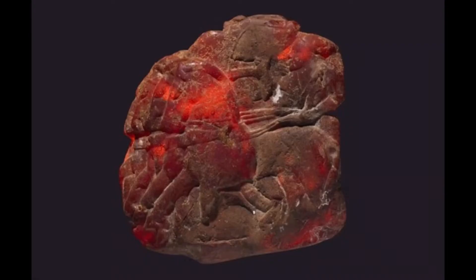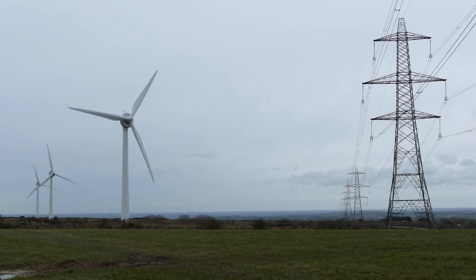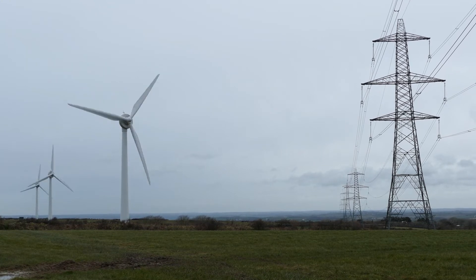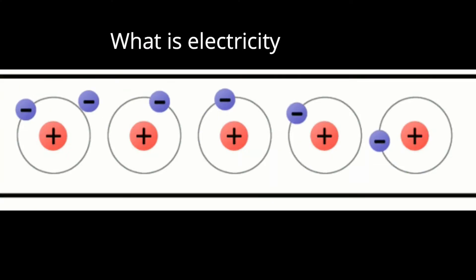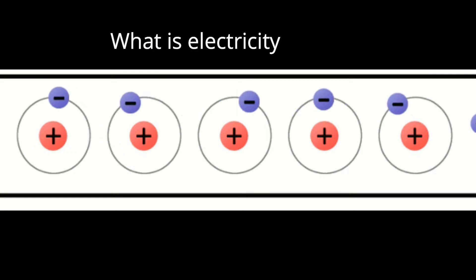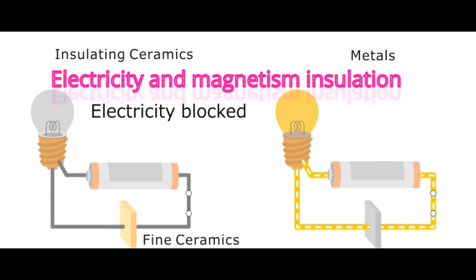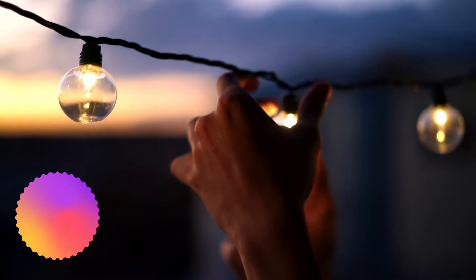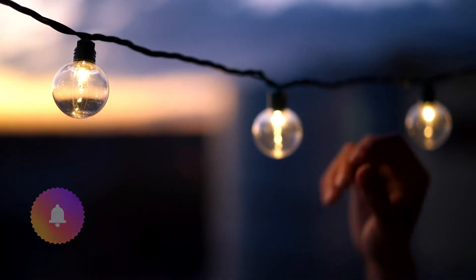The ancient Greeks discovered that small threads and dust tended to stick to their amber jewelry, and that rubbing the amber, instead of removing the particles, only made the amber collect more debris. The urge to understand what caused the amber to attract threads and dust eventually led to our knowledge of electricity.